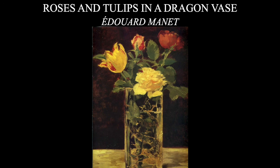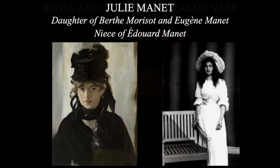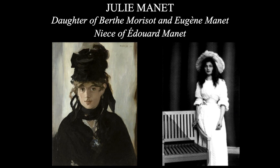Sadly, Manet passed away on April 30th, 1883, just 16 days after having a leg amputated. The last few months of his life he spent mostly painting in a garden — flowers were one of the things he absolutely loved to paint, and he created many still lifes during those final days. One final note about Manet: his brother Jean ended up marrying one of his models, the artist Berthe Morisot, and they had a daughter named Julie Manet, who went on to publish a diary of growing up during the age of Impressionism.